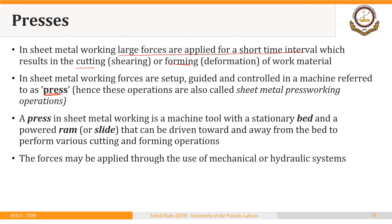These operations are also called sheet metal press working operations because of the press being used, or they are also called stamping operations. A press in sheet metal working is a machine tool with a stationary bed and a powered ram — the ram is also called a slide — which can be driven toward and away from the bed.